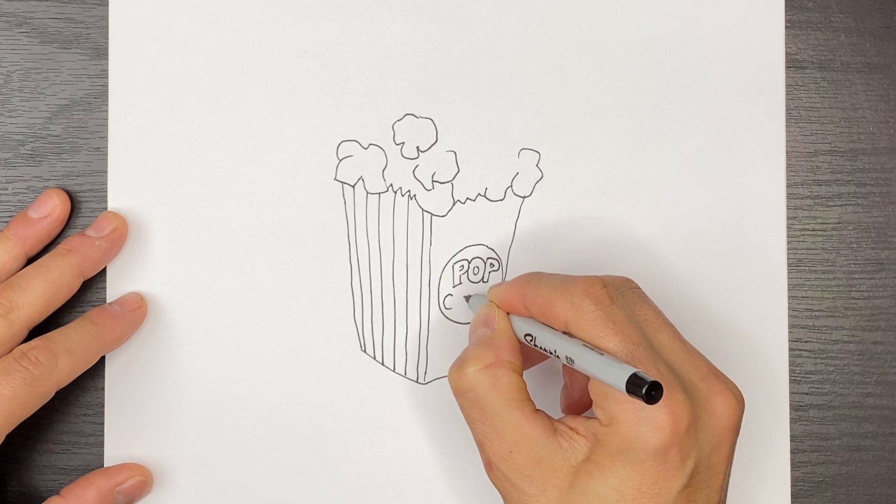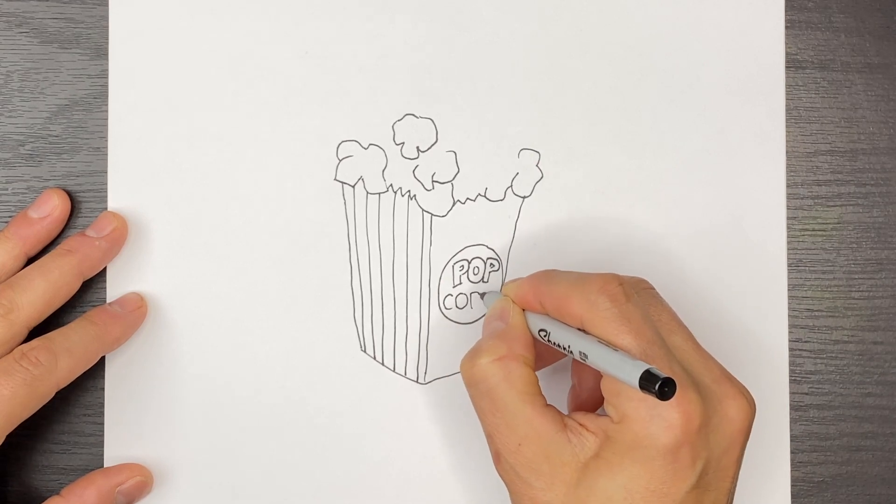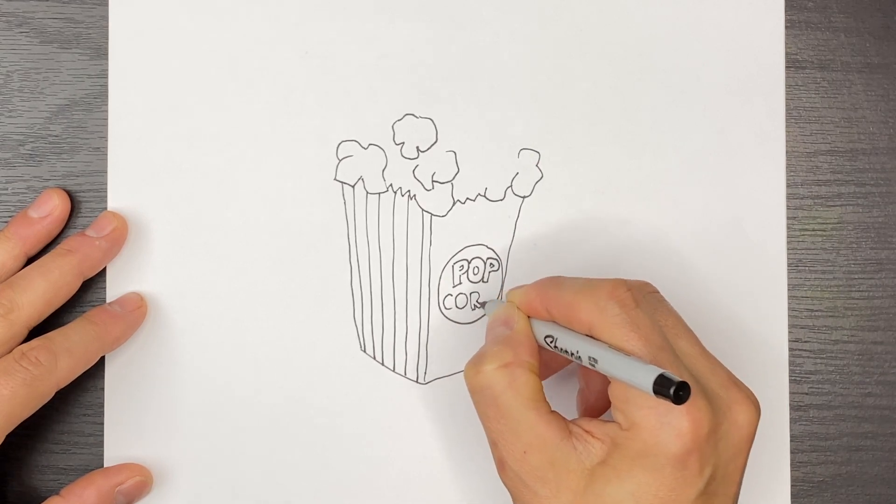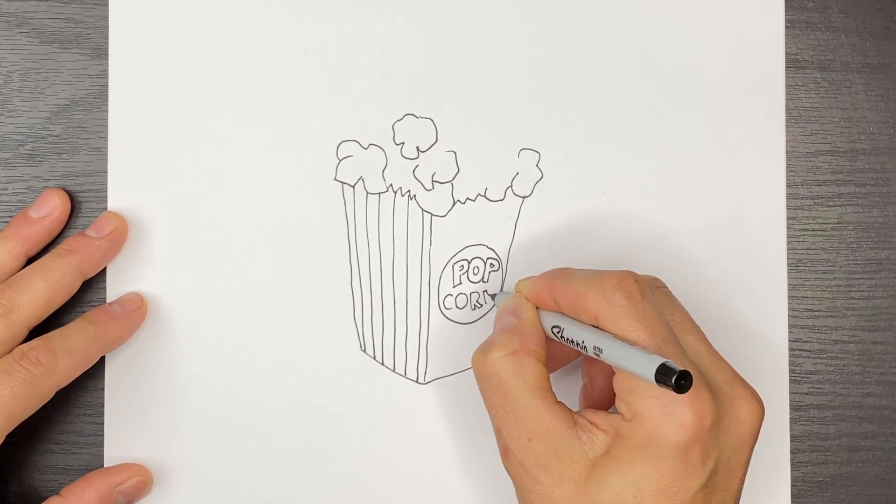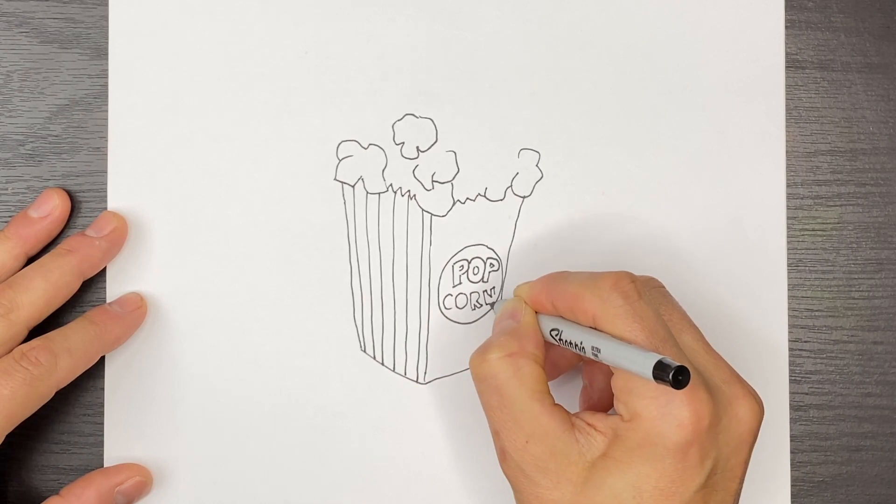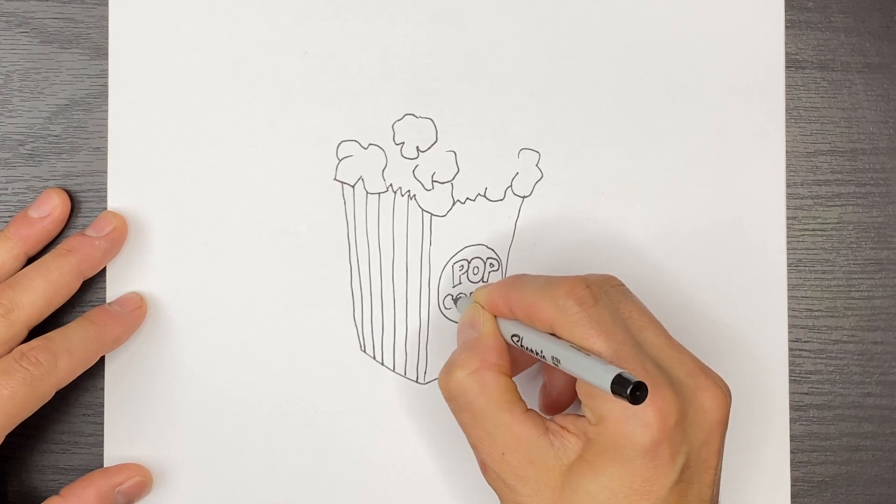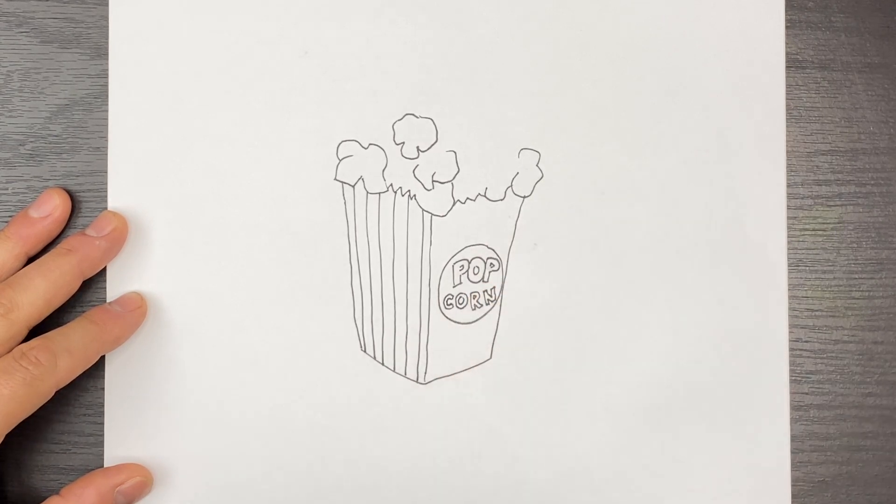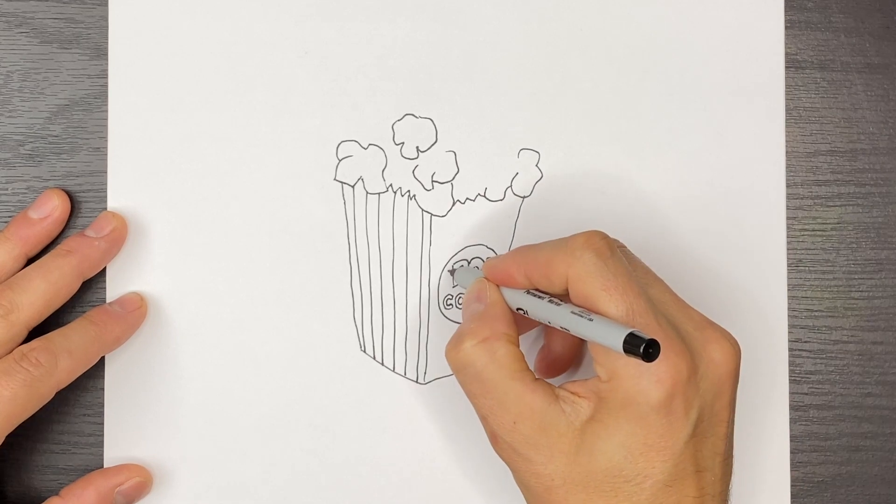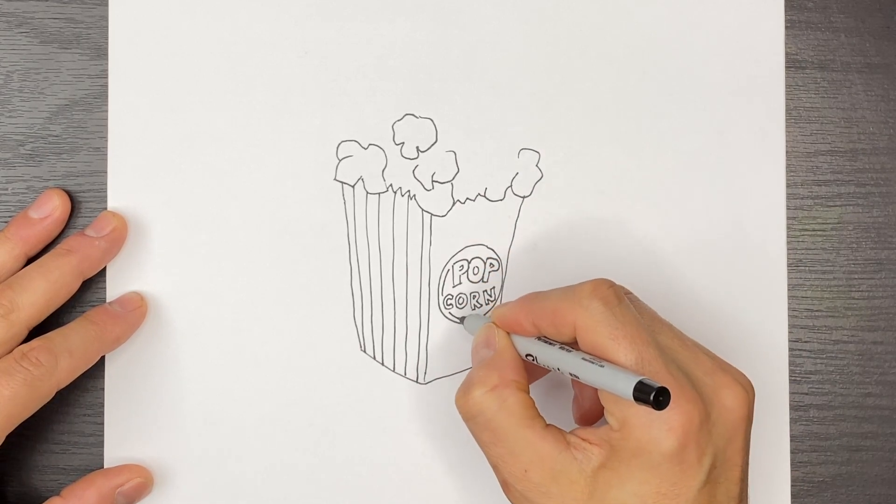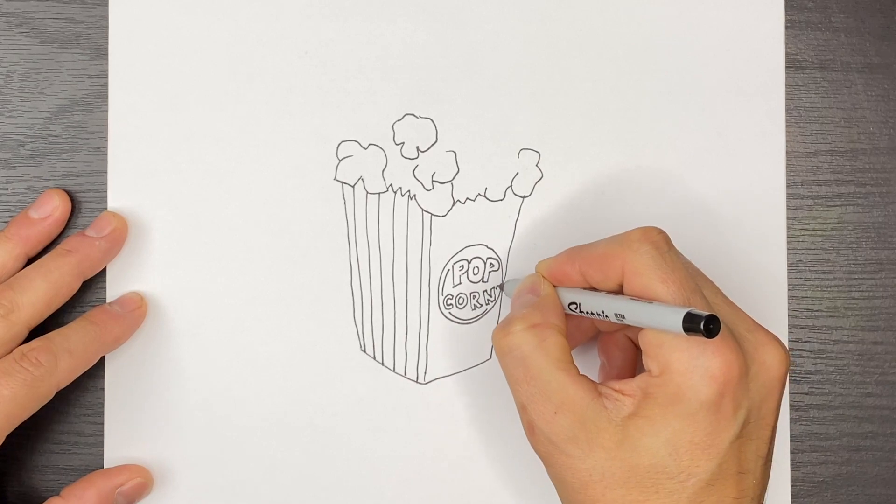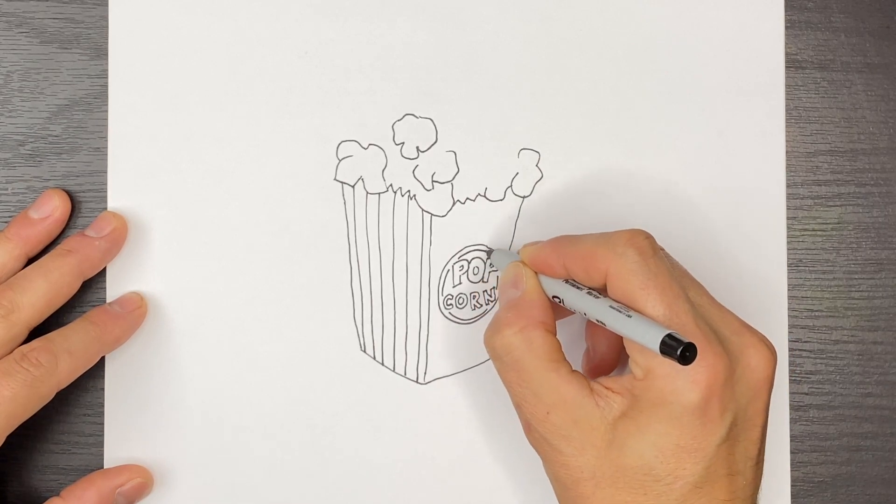And then the corn will be a little smaller. So we'll do a C, O, R, and then an N. I'll just fill in those letters, make them a little bubble style. And then we'll draw a ring around this. Just like that.